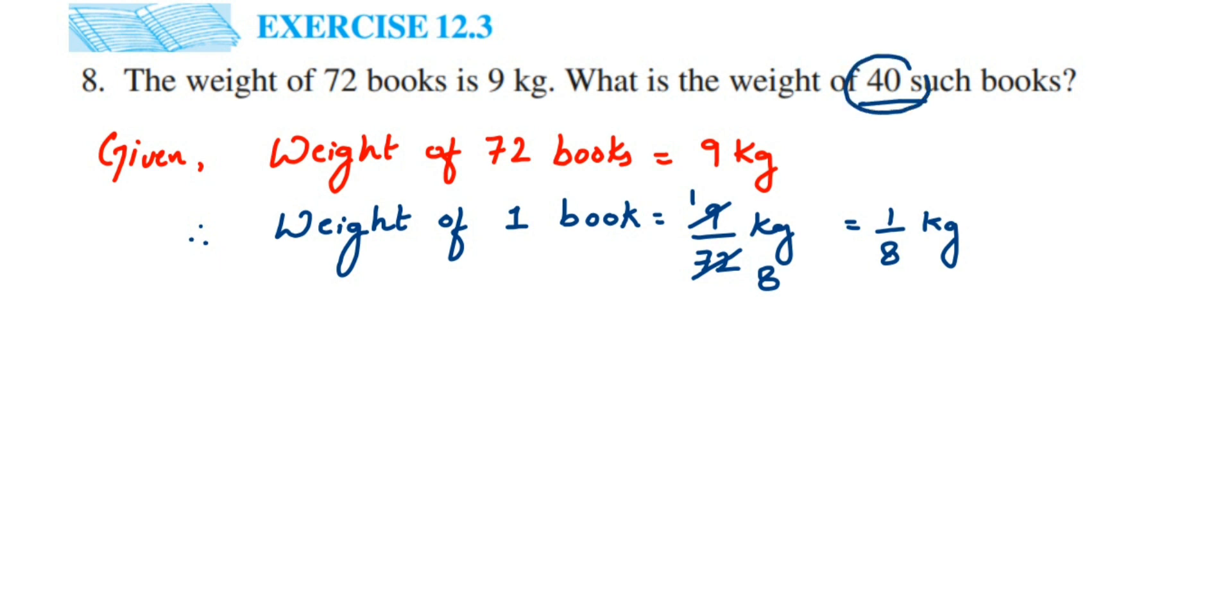So therefore, weight of 40 books will be equal to 40 multiplied by 1 by 8 kg.